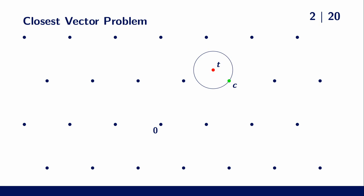In this example, the closest lattice point is easy to spot, but in higher dimensions this also becomes a hard problem.